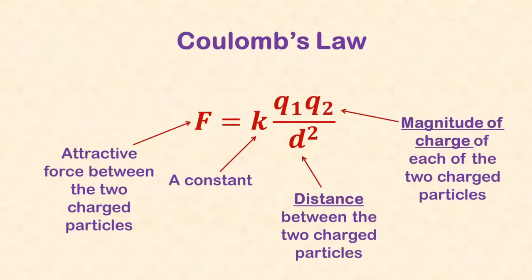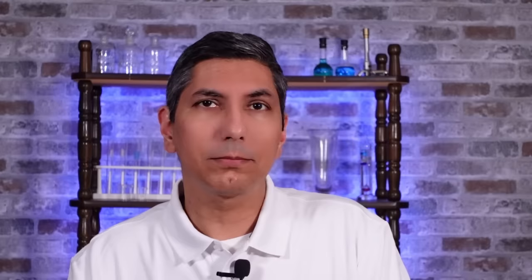We all know that opposite charges attract. Well, Coulomb's law says that the greater the magnitude of charge, the stronger that attractive force will be. And the closer together those charged particles are, the stronger their attractive force will be. This is why valence electrons are held less tightly to the nucleus. They're literally farther away.